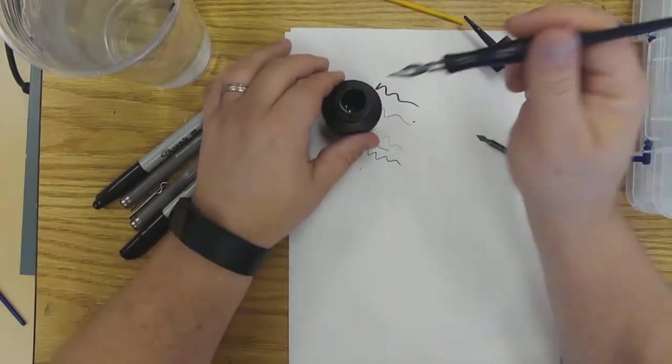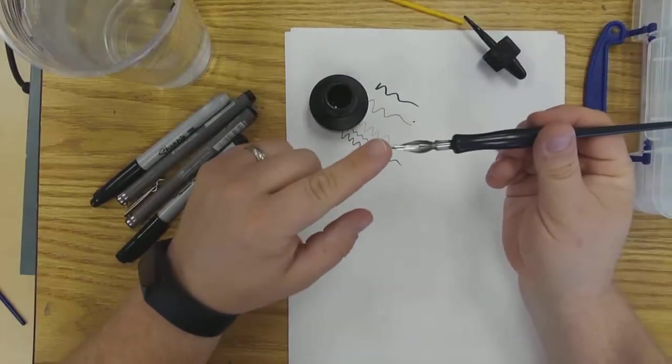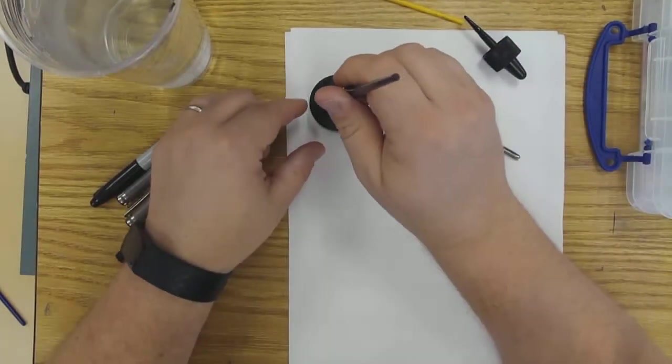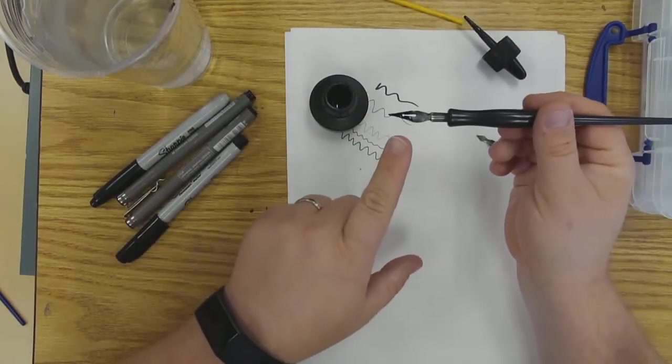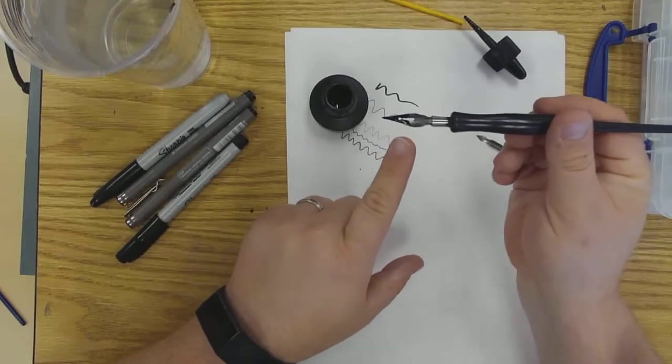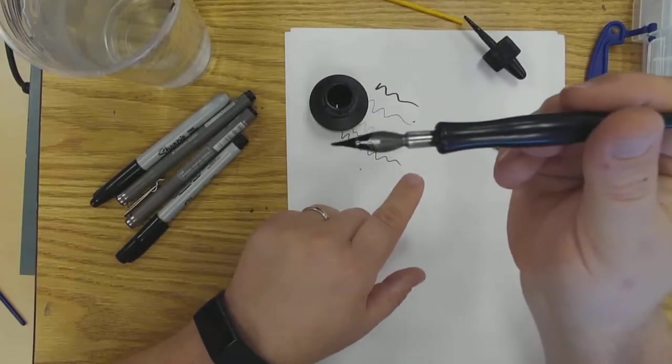Basically what you do is you take your nib and you dip it into the bottle of ink. You want to dip it in about to where this little opening is. If you look really closely at it, you can see there's this little, it looks kind of like a keyhole or an exclamation point.